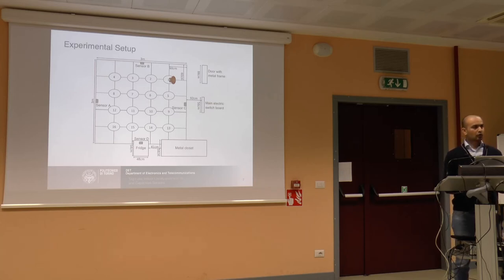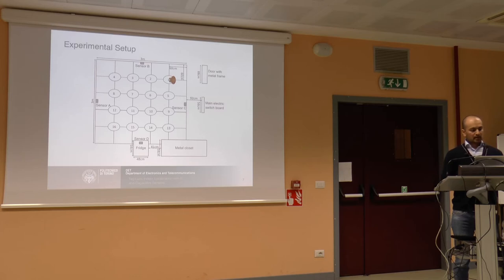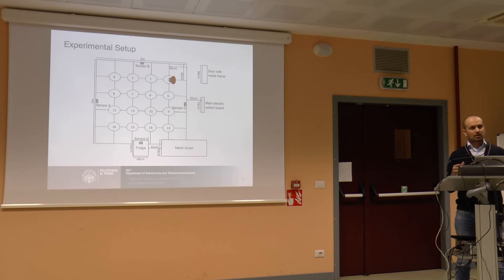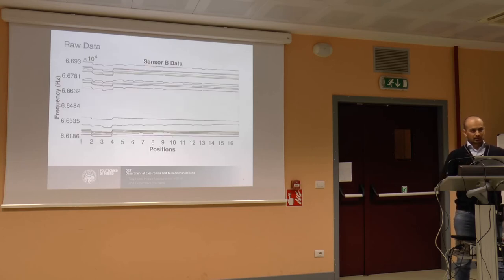For the room experiment we designated a small three-by-three meter space containing routine objects such as a fridge, a metal closet, an electric switch, and a door. We divided the space into 16 known positions and placed four sensors on each of the walls at chest height. Each position is 60 centimeters away from the adjacent one. A person stands on each position, we gather data, then move to the next position, continuing for all 16 positions.